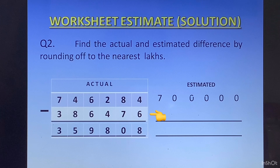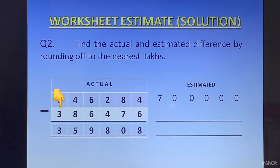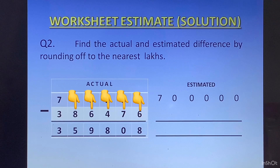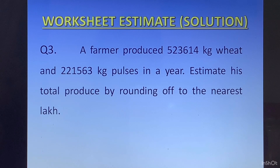In the second number we have 386476. To round it off to the nearest lakhs place, we will look at the digit at the 10,000 place, which is 8. Since 8 is greater than 5, we will increase the digit at the lakhs place by 1. The digit at the lakhs place is 3, so we will make it 4, and all the digits on the right will be converted to zeros. We will get 4 lakhs. When we subtract, we will get 3 lakhs as the answer.